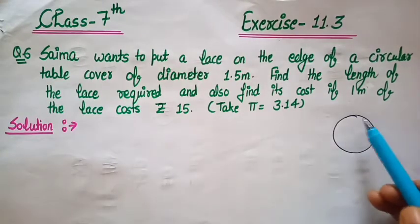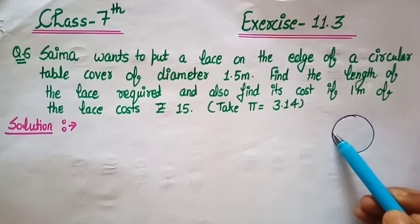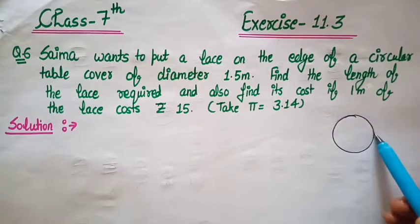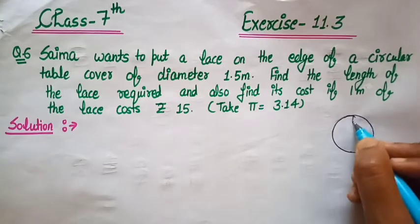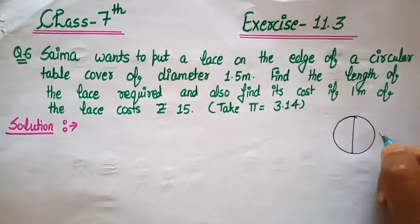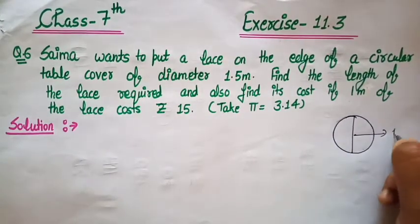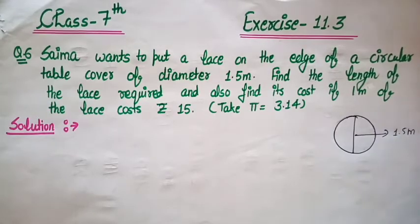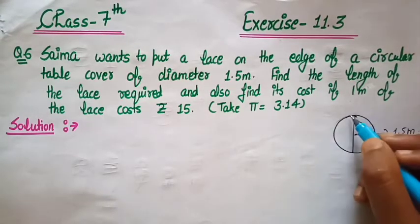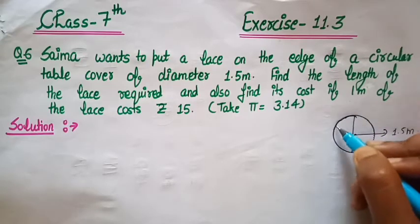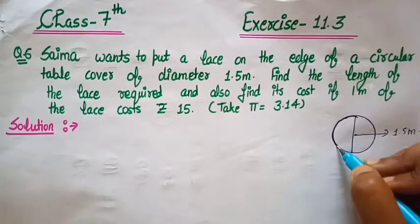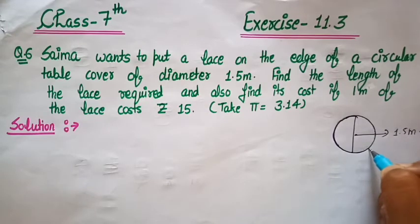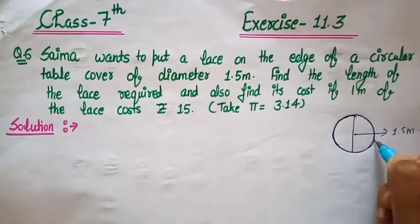Let's suppose students that yeh wo cover hai — table ka cover hai. Aur iska diameter hai, diameter means yahaan se yahaan tak distance, yeh diya gaya hai 1.5 meter. Yeh iska diameter hai. Aur iske edges pe — edges pe jo kynarae hai — lace wahan pe lagani hai, center mein nahi lagayegi, sirf edges pe.